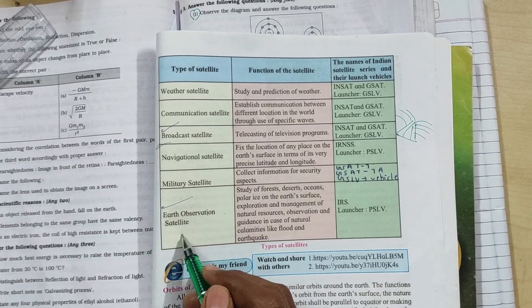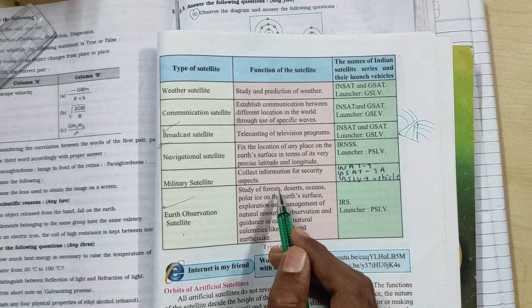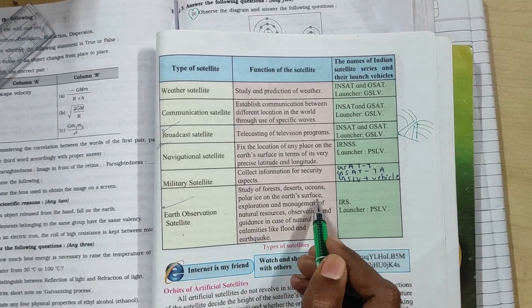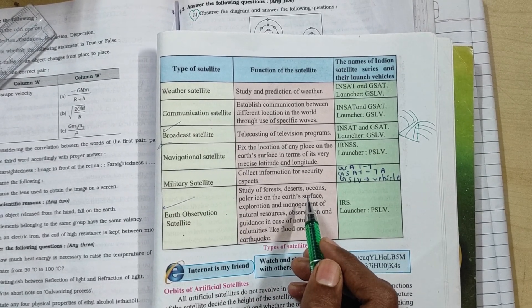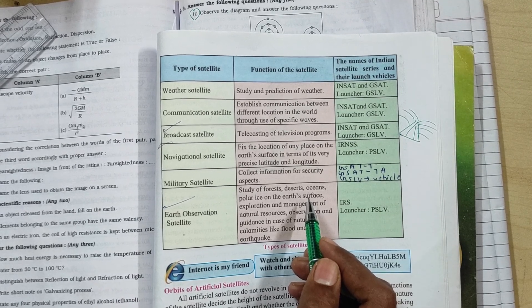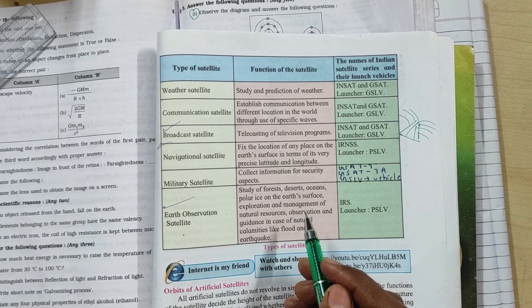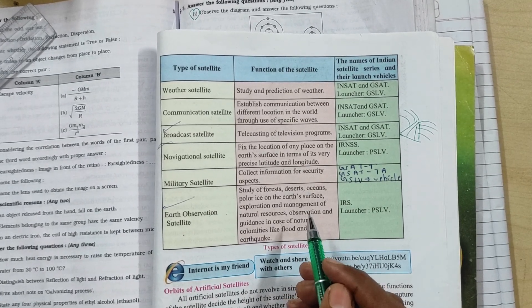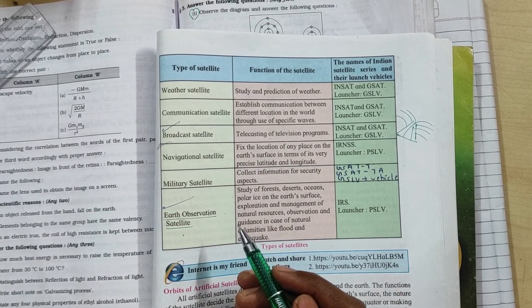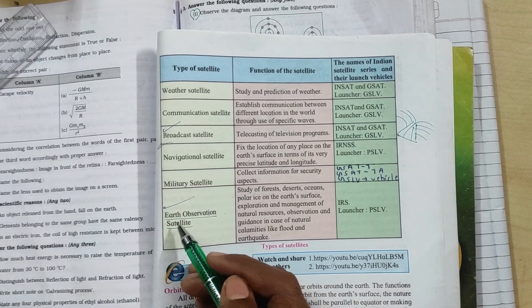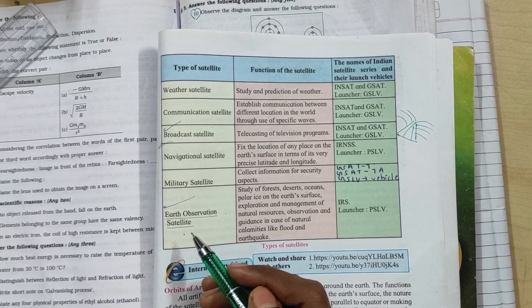Then we have Earth observation satellite. Earth observation satellite studies forests, deserts, oceans, polar ice, Earth surface, etc. A very important thing to be mentioned here is the one-horned rhinoceros in Assam. To protect them, this satellite had played a very important role. Again, if you want to count how many tigers are left in India, Earth observation satellite is really important which comes into perspective.